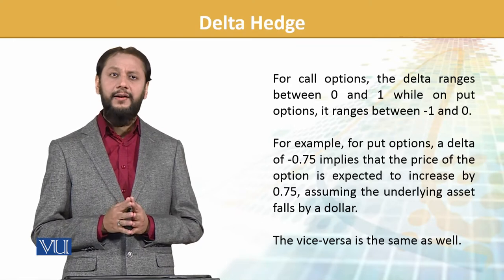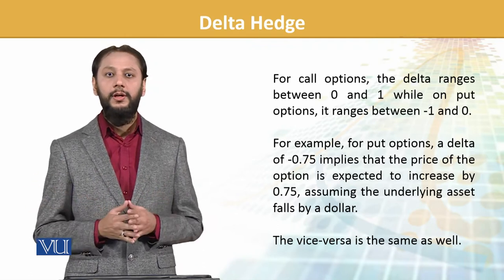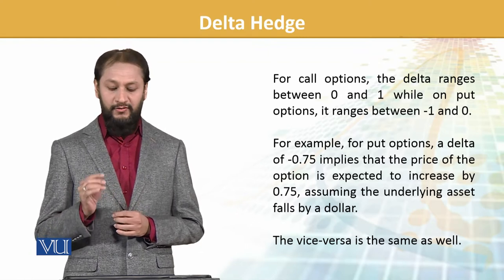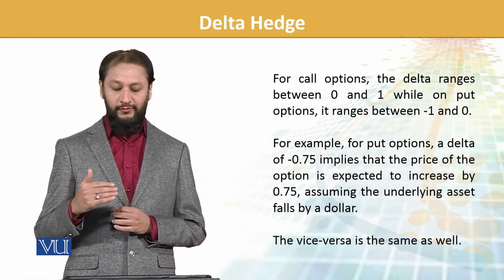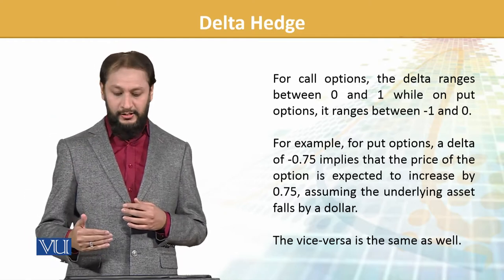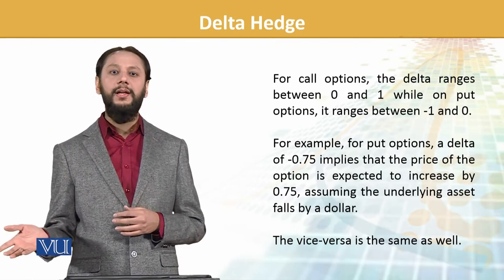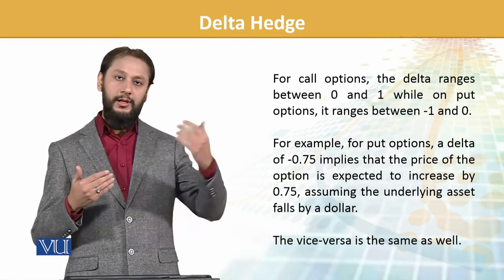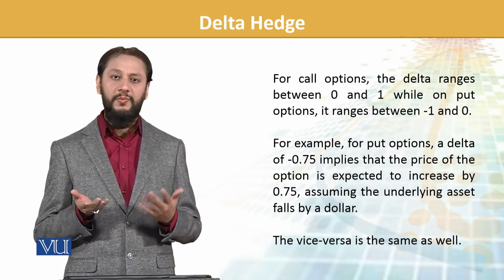For a call option, delta ranges between 0 and 1, while for a put option it ranges from minus 1 to 0, depending on the direction of movement. For example, if a put option has a delta of minus 0.75, it implies that the price of the option is expected to increase by $0.75 assuming the underlying asset falls by $1. The put option moves in the opposite direction — if the underlying falls, the option rises by 0.75.